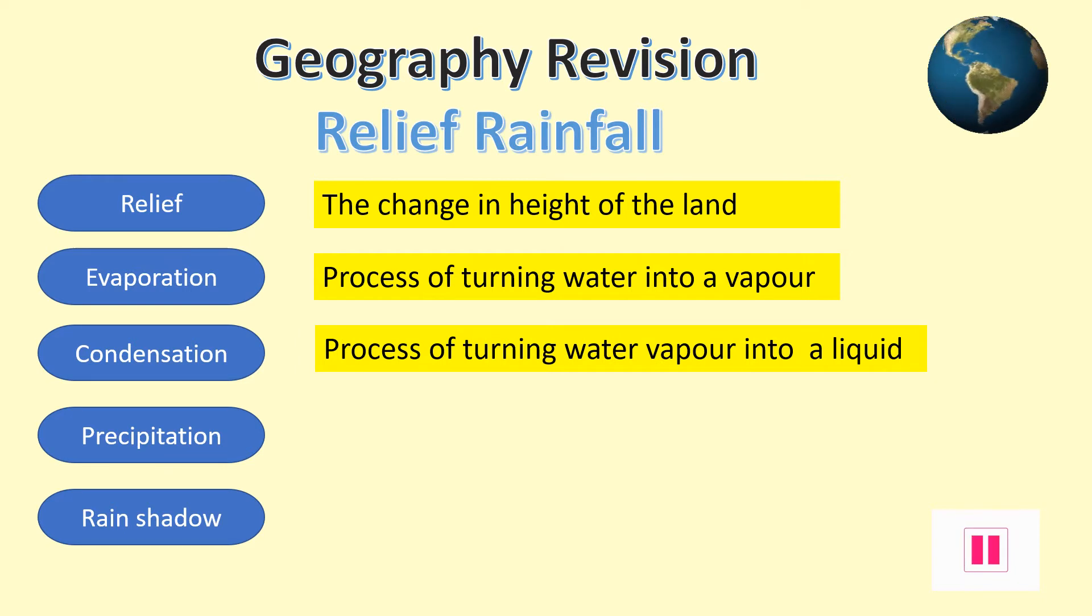The next important part of the water cycle is condensation. This is the opposite of evaporation. Here, water vapor changes and turns into a liquid such as water. This normally happens when the air starts to cool and starts to form clouds.